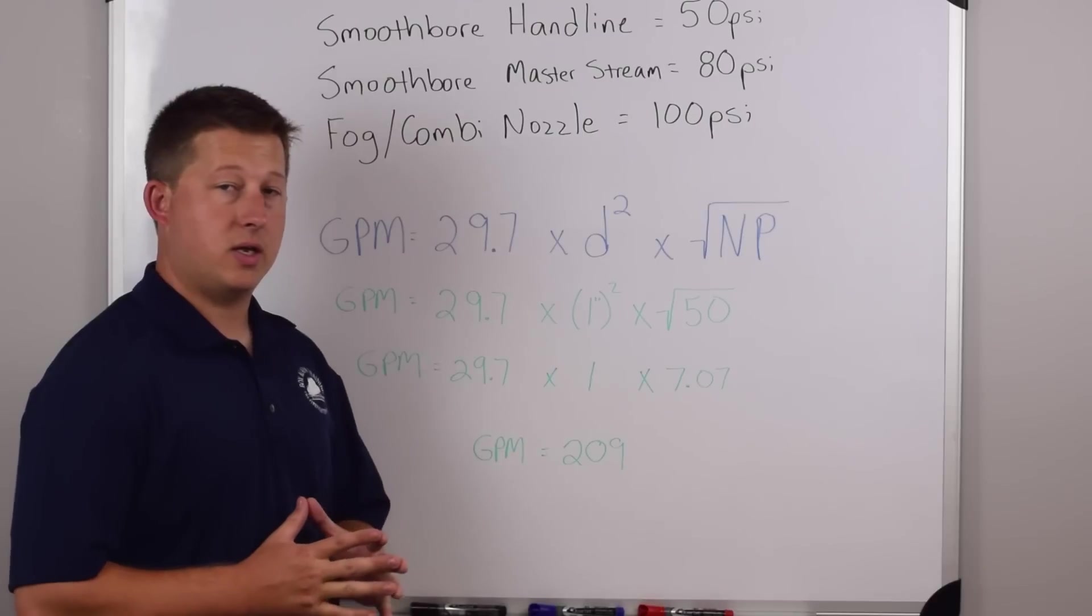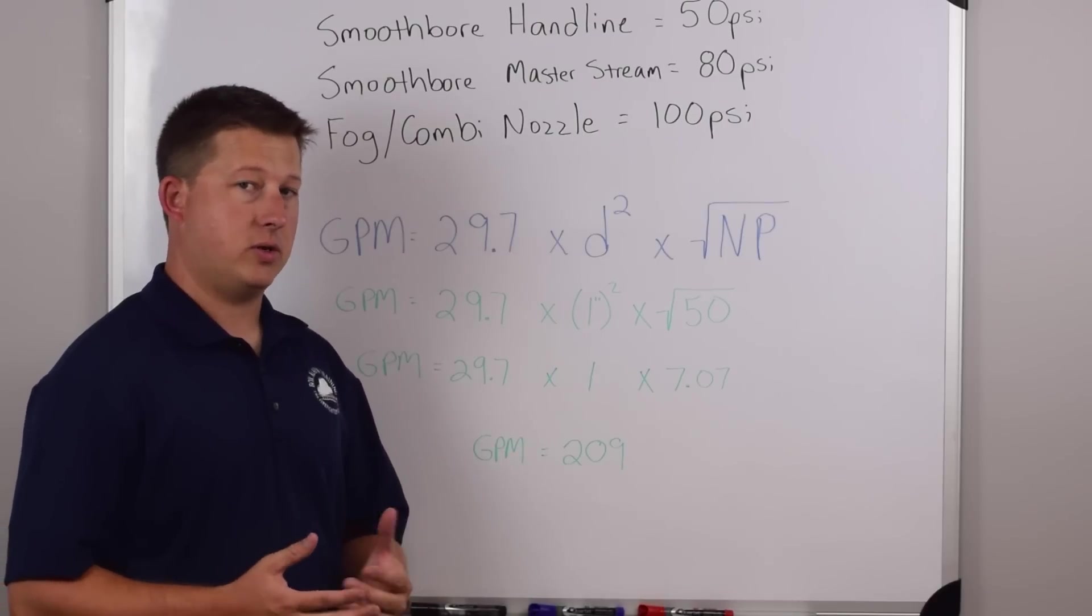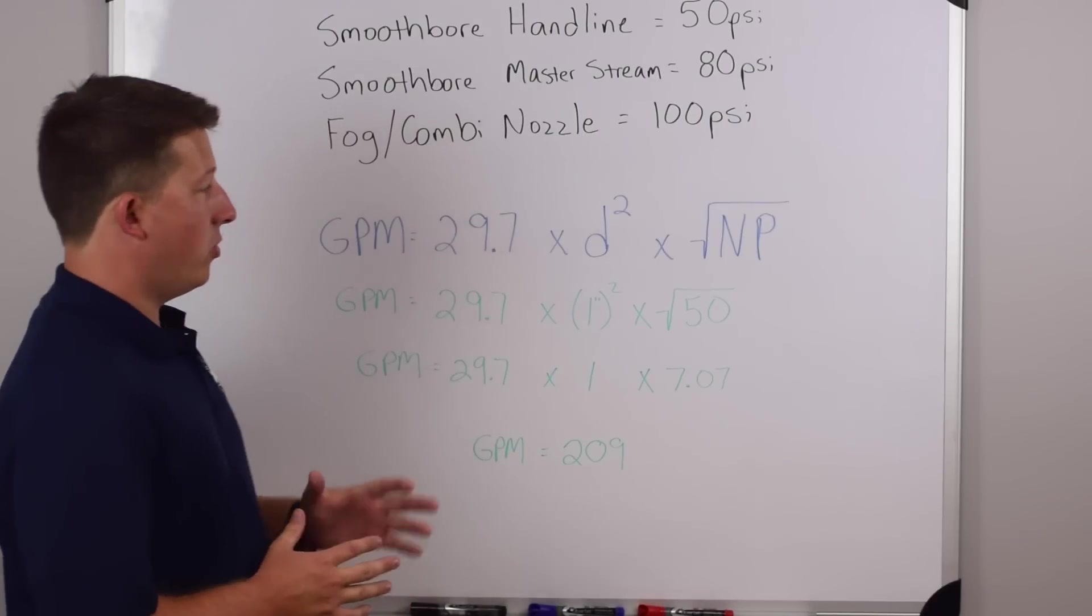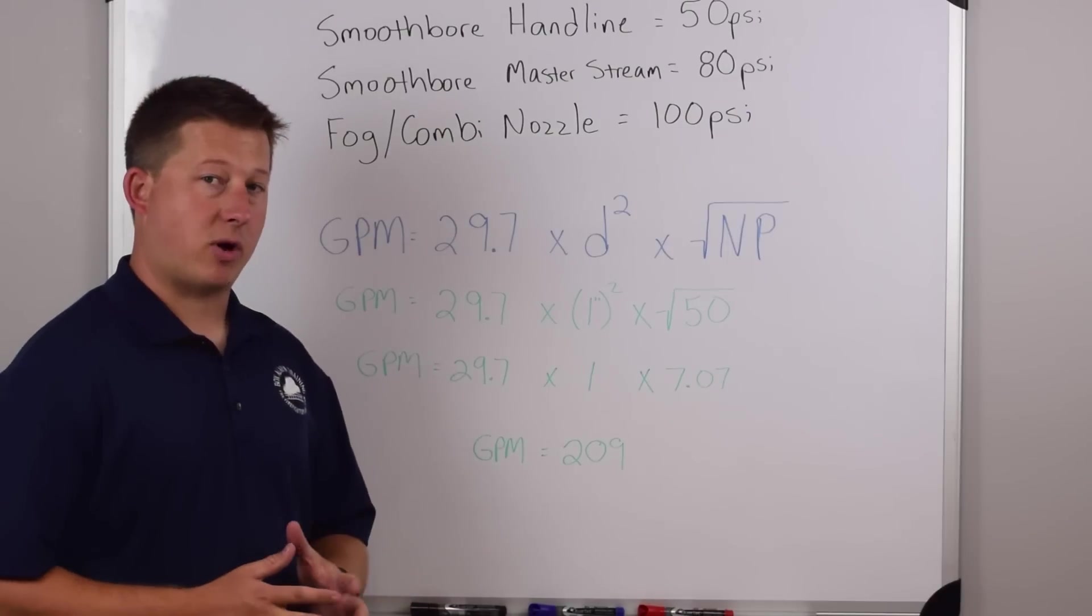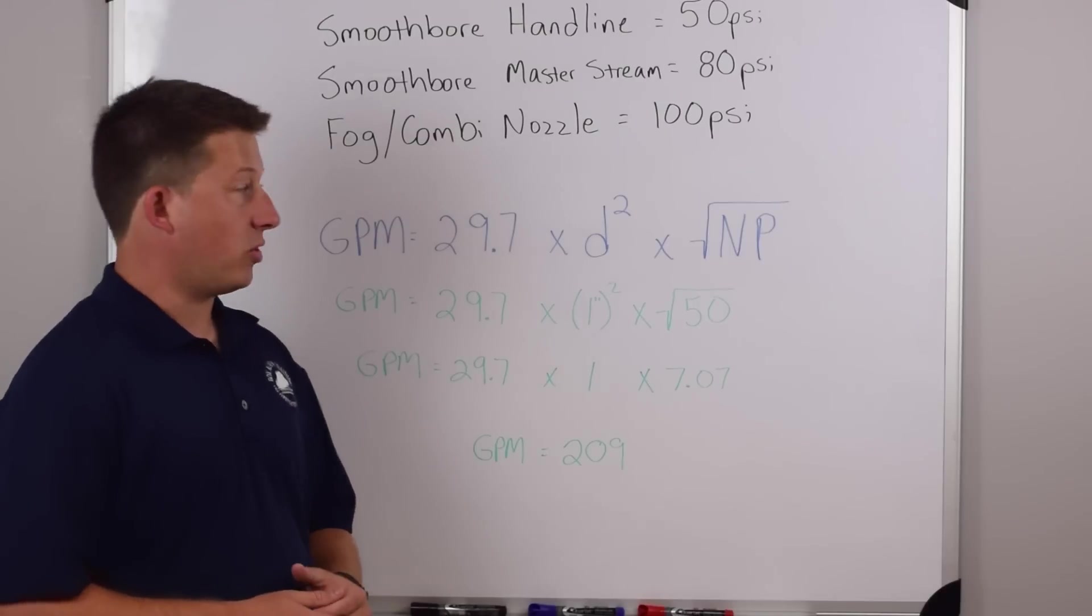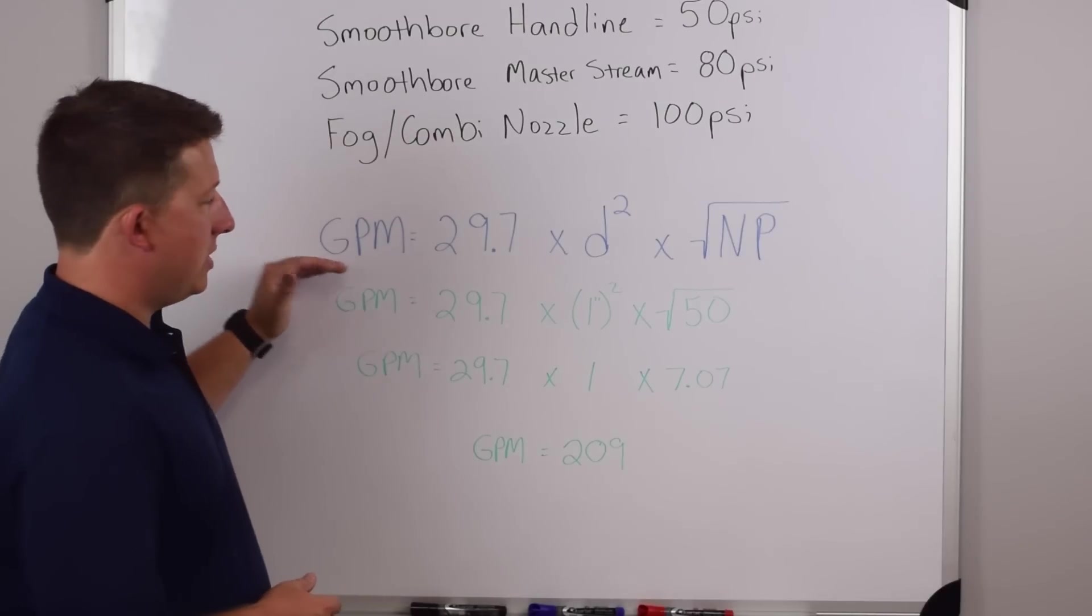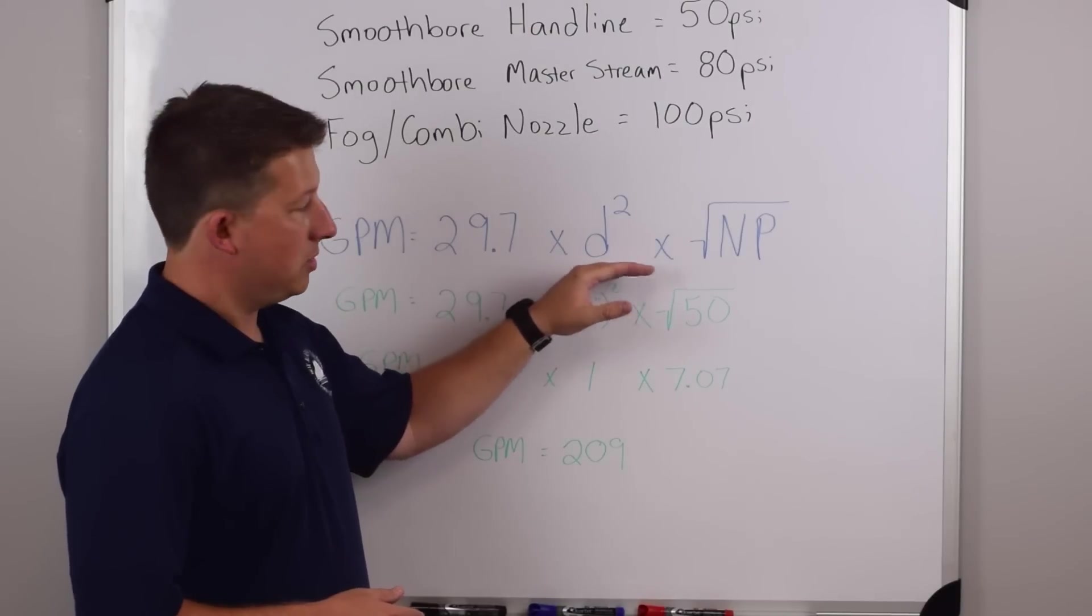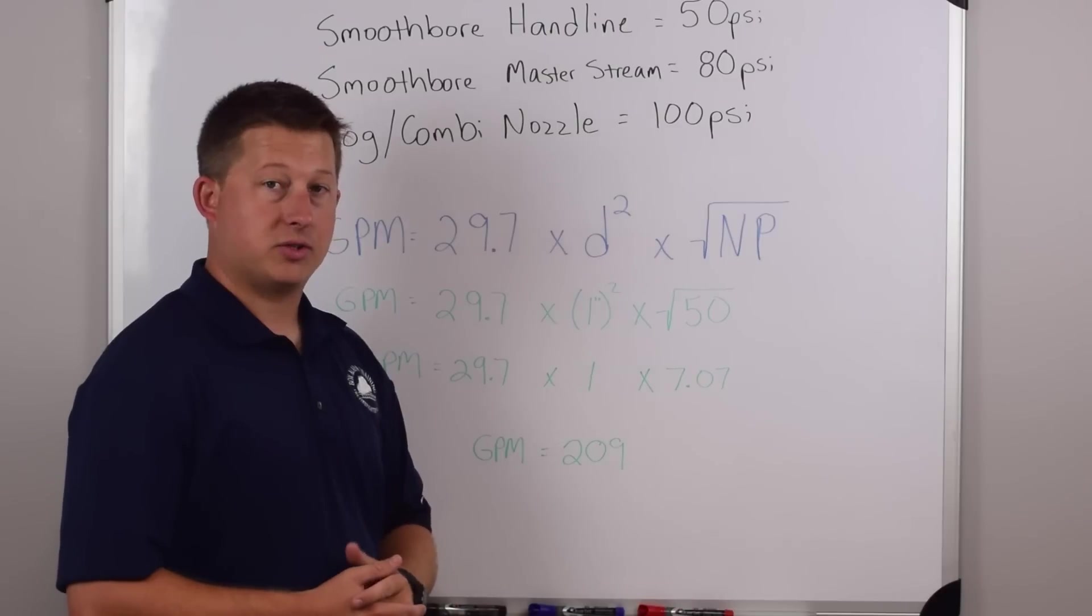I've already written the GPM formula that we use to calculate the gallonage or the flow of water through the nozzle. And what I've done is done a sample problem with a one inch smoothbore hand line. So it's going to operate at 50 PSI nozzle pressure. So the formula is GPM equals 29.7 times diameter squared times the square root of nozzle pressure.